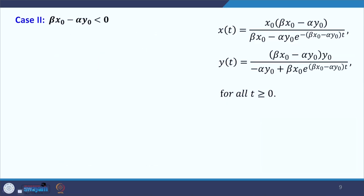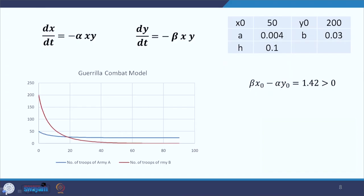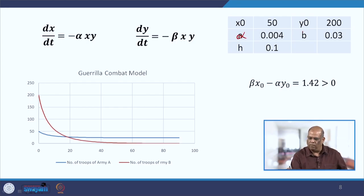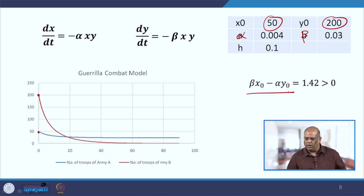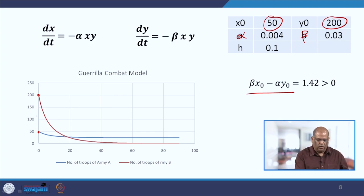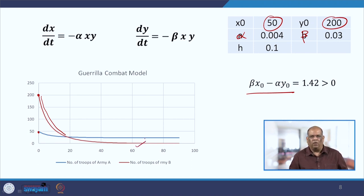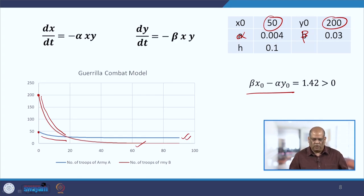Here is the numerical figure. With x₀ = 50 for army A and y₀ = 200 for army B, and β·x₀ − α·y₀ confirmed positive, we can see that although army B starts with a much larger number of troops, their decline is quite sharp. At one point, their numbers drop below army A's, and ultimately all of them are killed. Army A maintains a steady value with some losses but succeeds — demonstrating the advantage of this Guerrilla combat strategy when fighting coefficients are favorable.